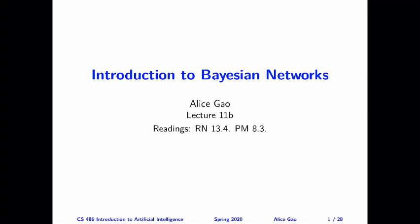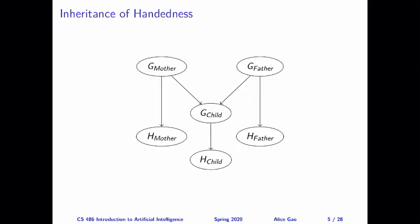Let me give you a few examples of the kind of problems where we might want to use Bayesian networks as a model. You might not have seen a lot of examples of Bayesian networks in your daily life, but hopefully once you see these examples, you will realize that they are pretty natural kinds of models for certain scenarios.